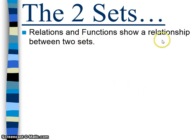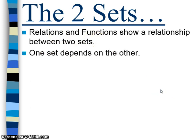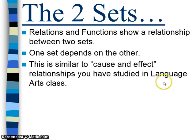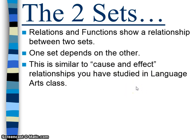Any two sets that show a relationship will be either a relation or a function — we'll talk about which one in the next lesson. When we have these two sets, most of the time one set will depend on the other. It's similar to cause and effect relationships from language arts class: if I touch the stove, I will get burnt. The cause is I touch the stove; the effect is I will get burnt. One causes the other, or one depends on the other.